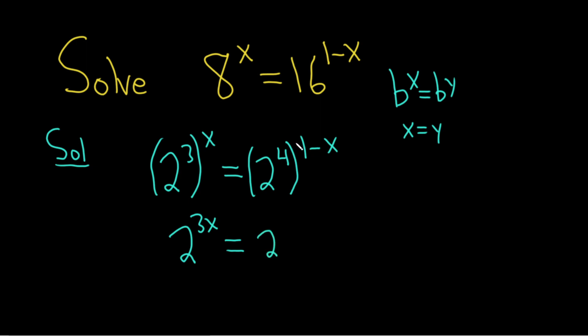So this is 2. It's really important to distribute. 4 times 1 is 4. 4 times negative x is negative 4x.